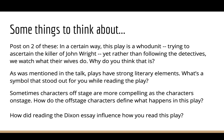Plays have strong literary elements — what's a symbol that stood out for you while reading the play? What's something that happens that feels like it has more meaning or weight than just being an element of the plot? Also, the men are there to find out who killed John Wright, so there's what we call an offstage character — a character who doesn't appear. Oftentimes offstage characters are more compelling and interesting than the characters onstage. How do John Wright and his wife, also an offstage character, actually define what happens in the play and exert an influence on what's going on? And finally, going back to the essay by Michael Bigelow Dixon, how did that influence how you read the play?